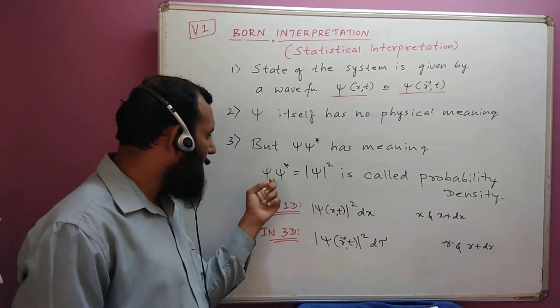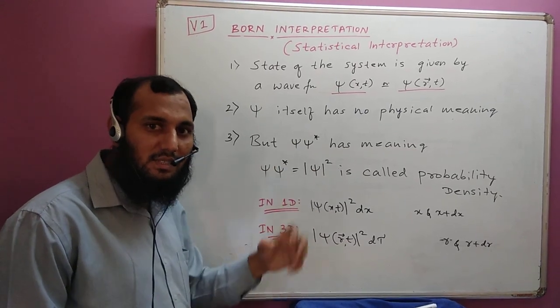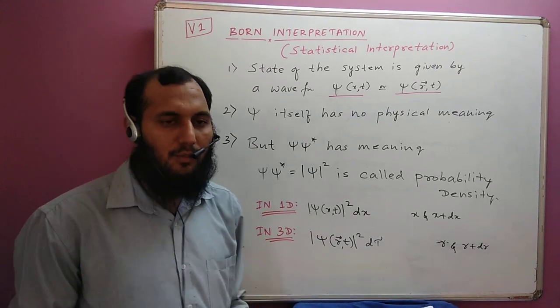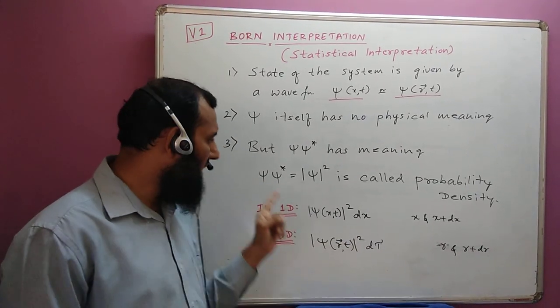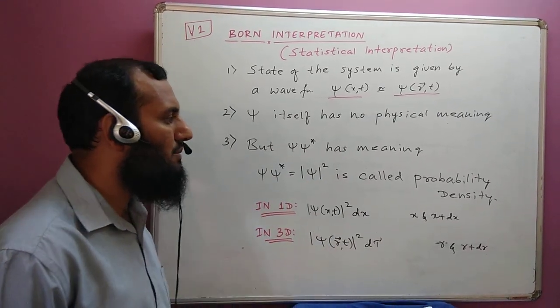The meaning is ψ into ψ*, where ψ is the wave function and ψ* is its complex conjugate. You know how to find the complex conjugate—finding a complex conjugate means just change the sign of the imaginary part. So ψ into ψ* is nothing but |ψ|². This is called probability density.